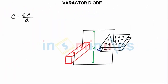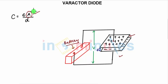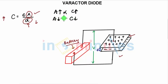To understand how a varactor diode works, you need to know what capacitance is and how it changes. In the diagram, there are two plates with an insulating dielectric material between them, with a voltage applied. The distance between the two plates is d. The capacitance formula is C = εA/d — capacitance depends on the area of the plates and the distance between them.